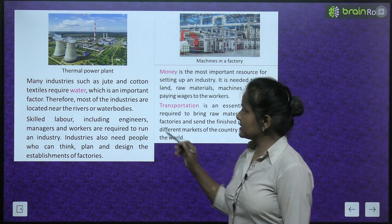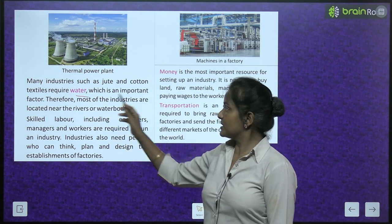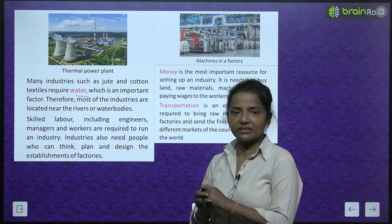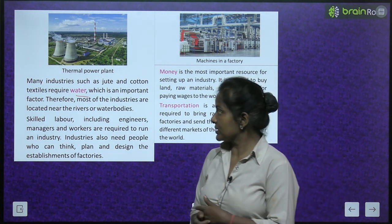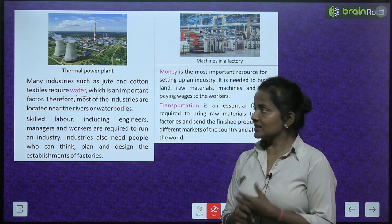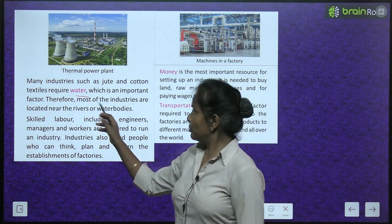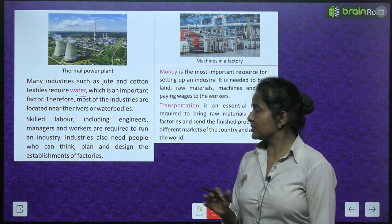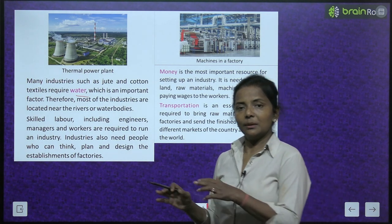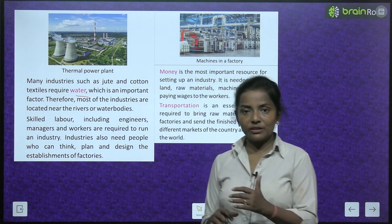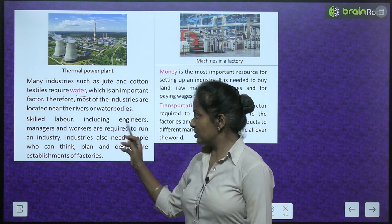Many industries such as jute and cotton textile require water, which is an important factor. Therefore, most of the industries are located near rivers or water bodies.